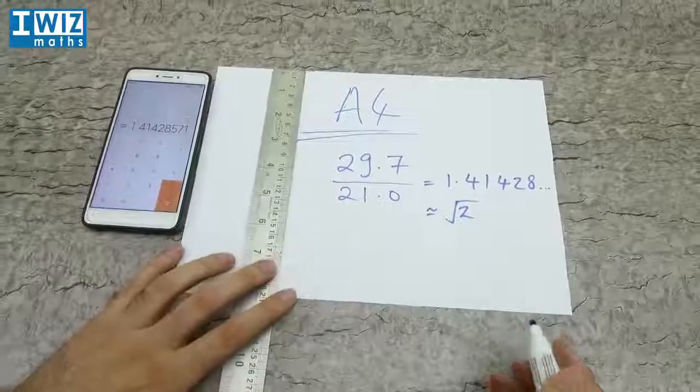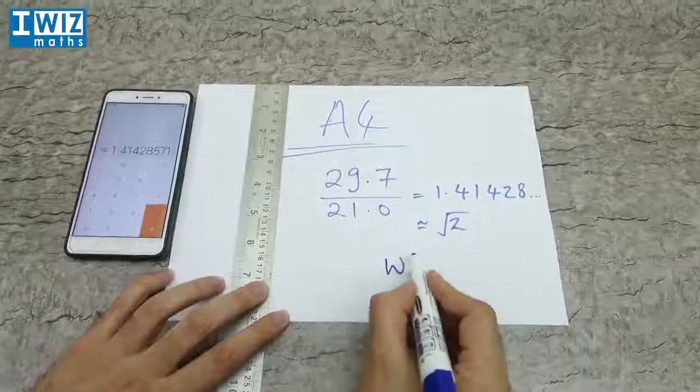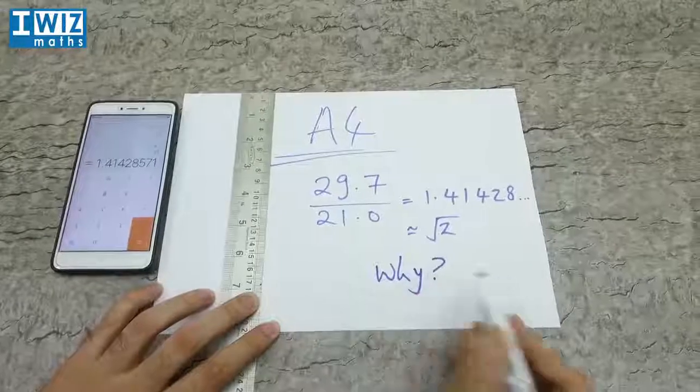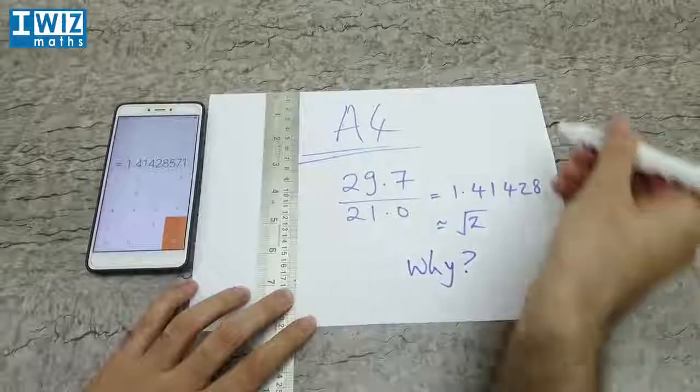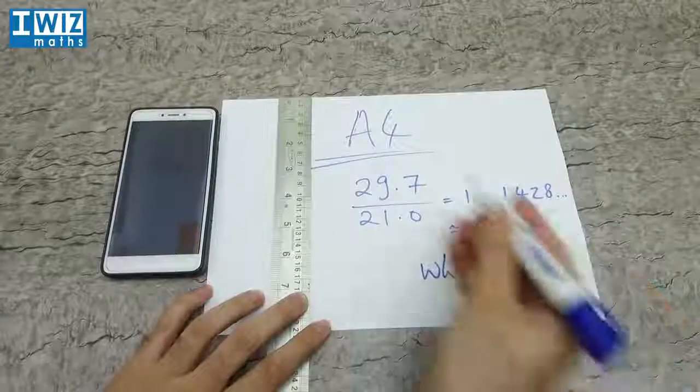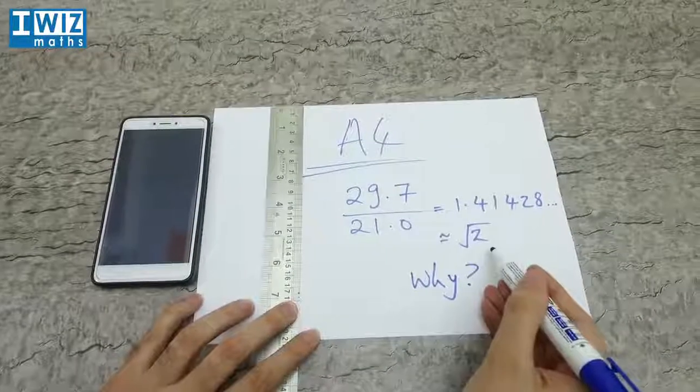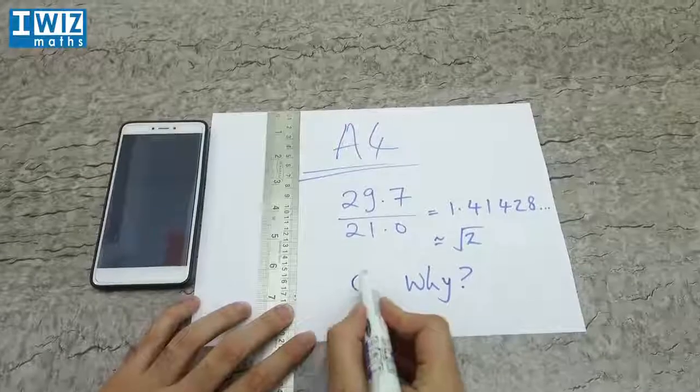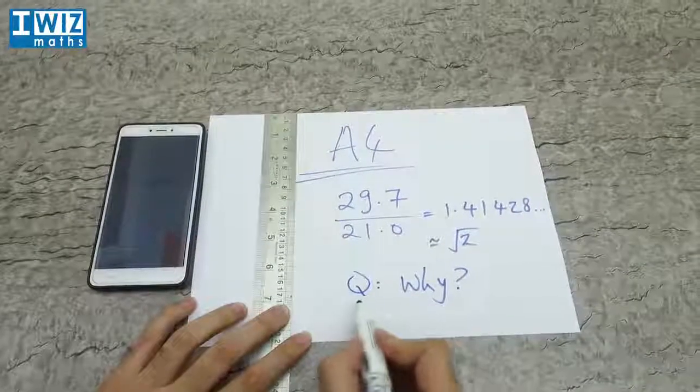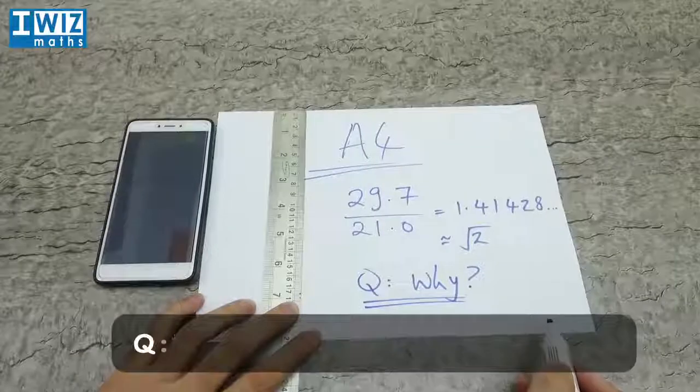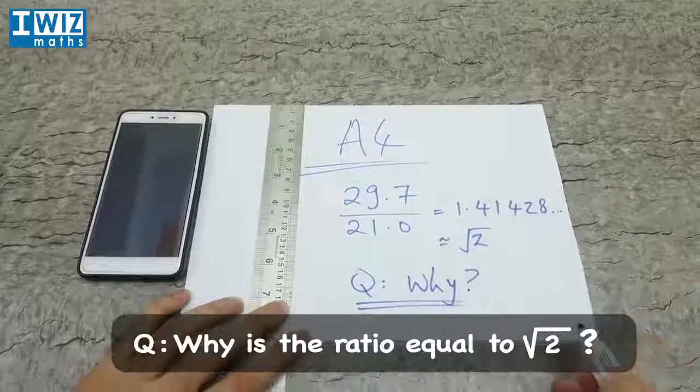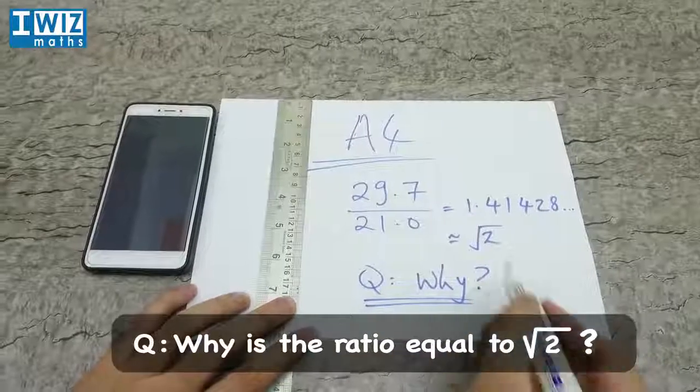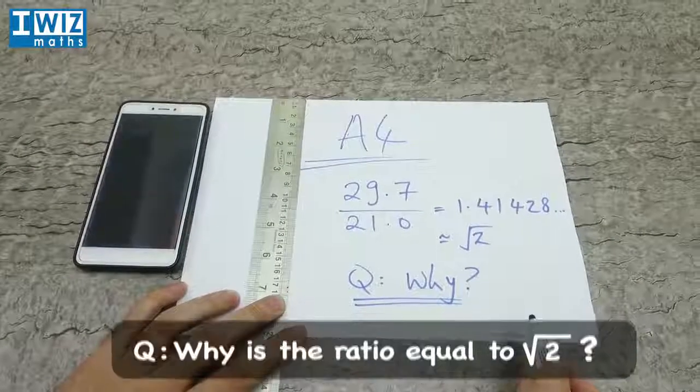The really fascinating question is the following: Why is it the case that when you look at the measurement of this side and divide it by the measurement of this side for an A4 sheet of paper, we get the square root of 2? We're going to leave you with this fascinating question of why these two ratios in an A4 sheet of paper turn out to be the square root of 2.